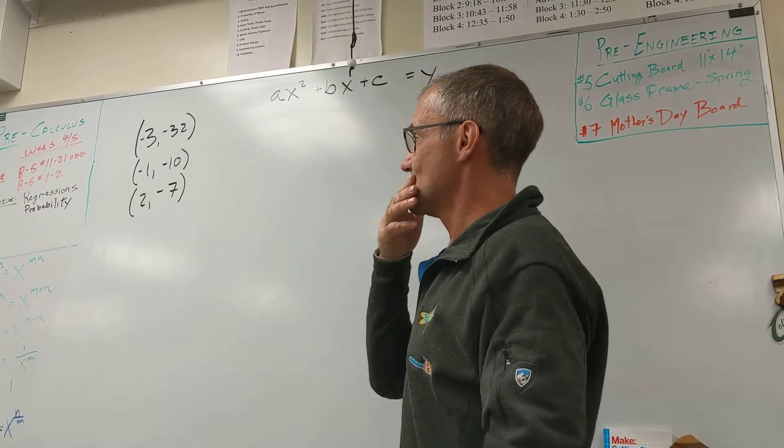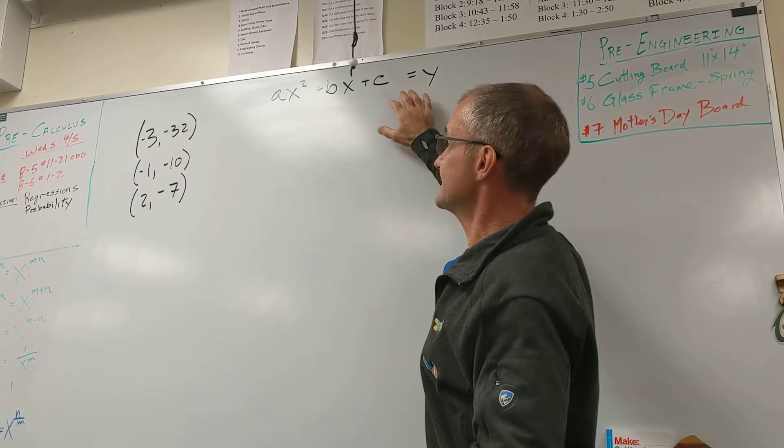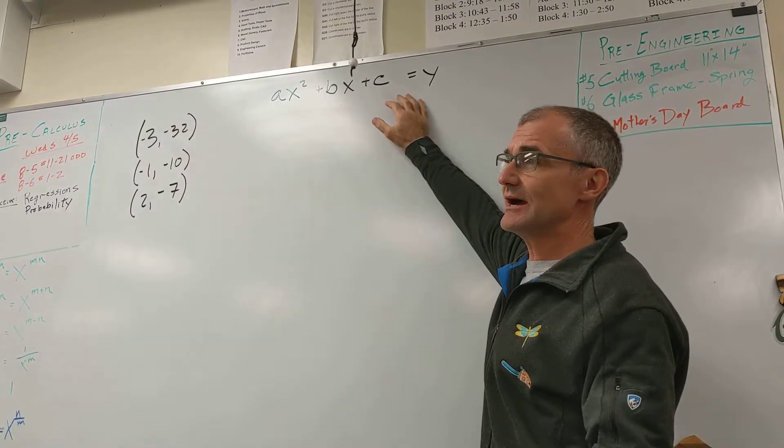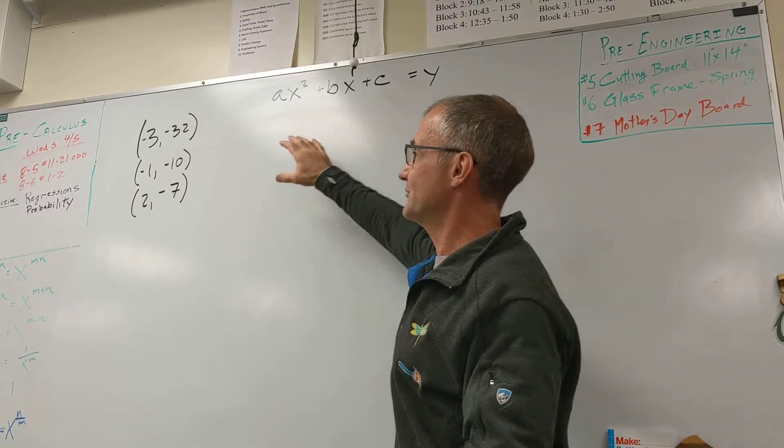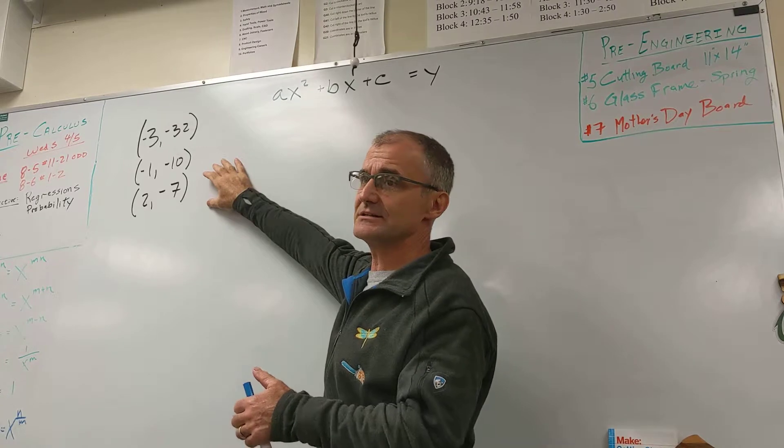And then if I have three points, and that's also a graph of a parabola. So that's a quadratic equation, equation of a parabola as well. And if I have three points that sit on that parabola, I can find the specific equation of the parabola.